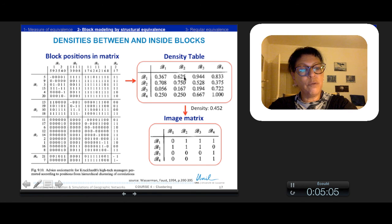Now, using a threshold of density, one builds an image matrix. This threshold is, for example, the whole density of the matrix, which is 0.452. All the values below are null, and all the highest values are 1.